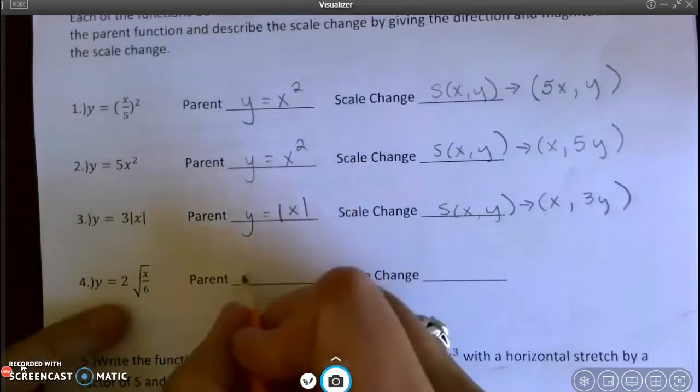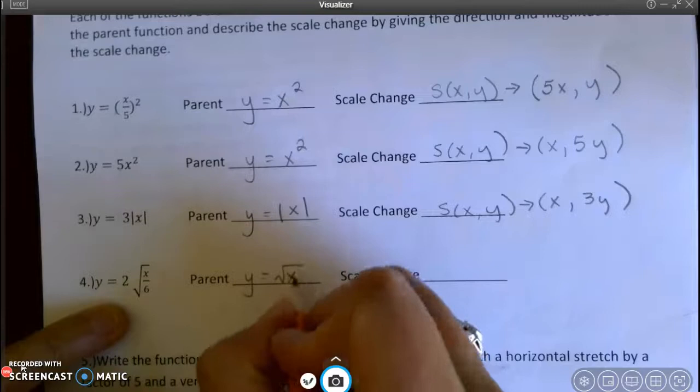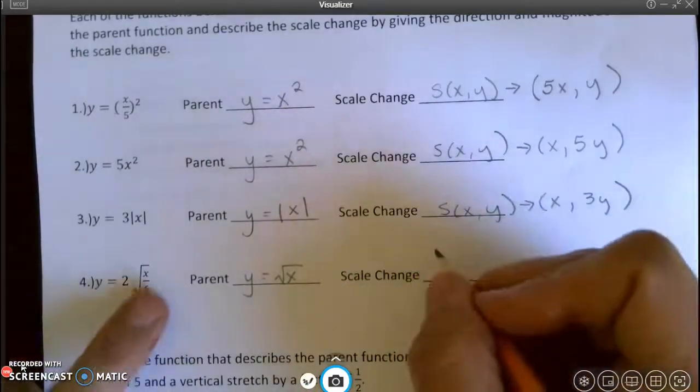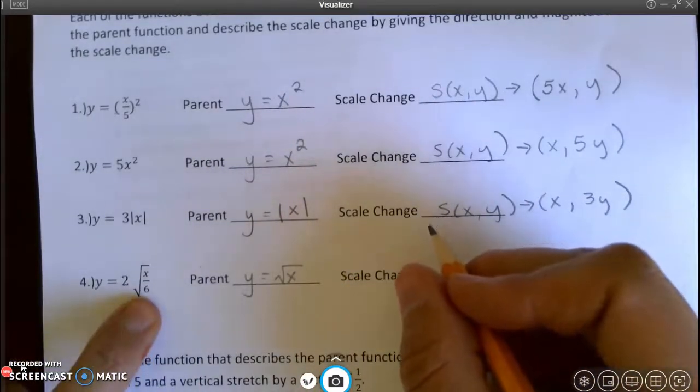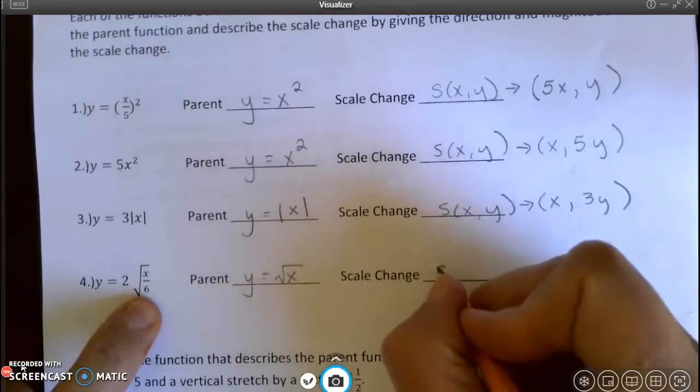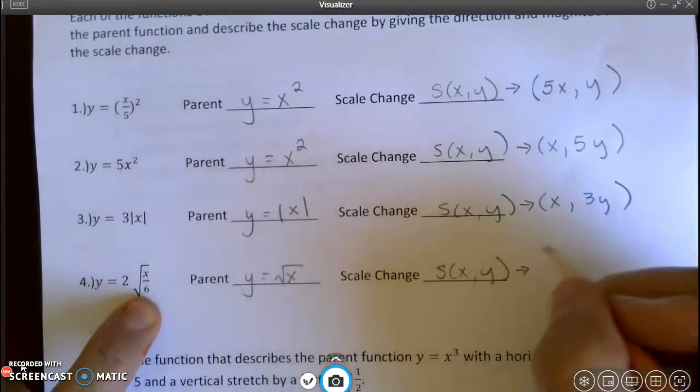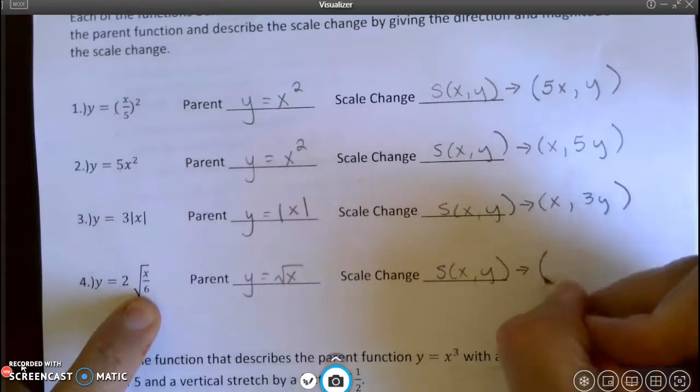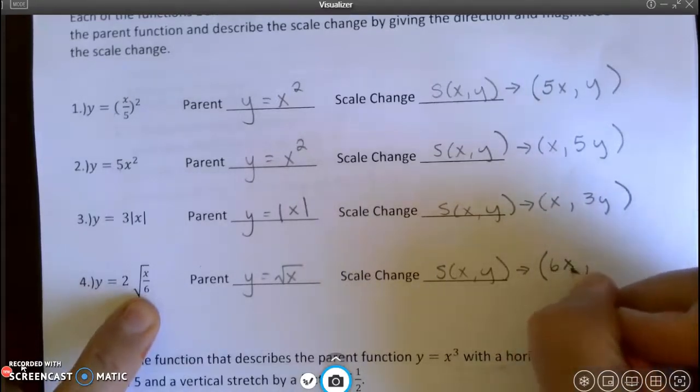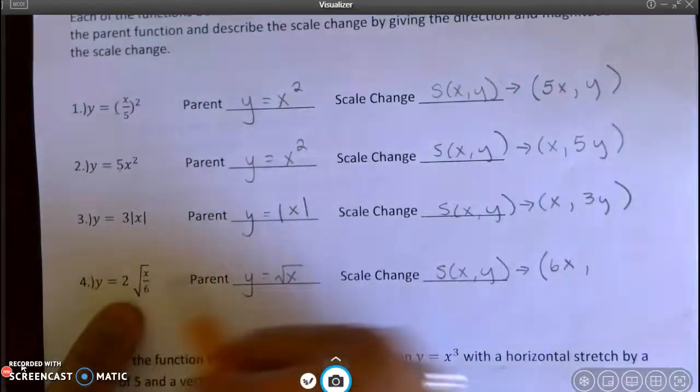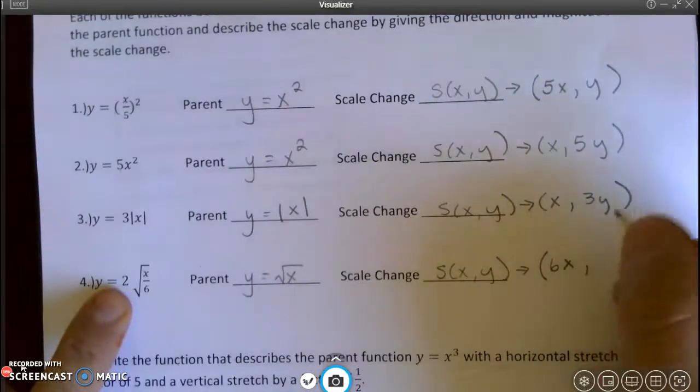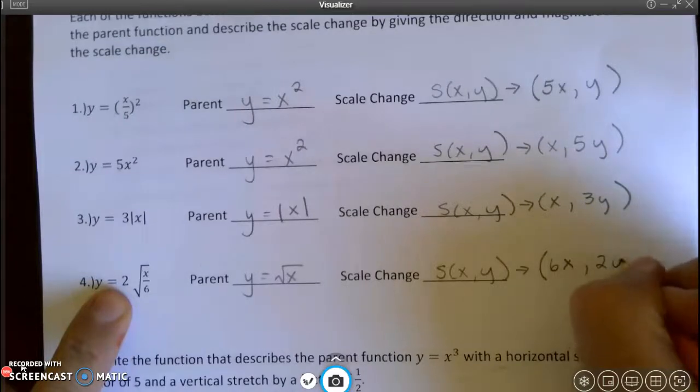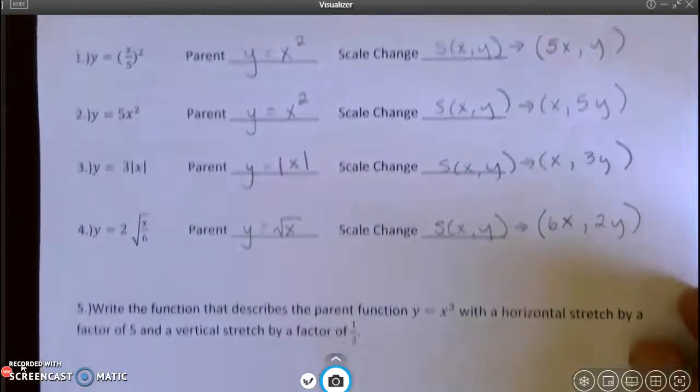All right, once again, what's my parent? y equals the square root of x. Since the 6 is in the grouping symbol with the x, that is affecting the x. It's being divided in the equation, so it must be multiplied in the scale change, x lies. Here it's multiplied, here it's divided. This 2 is outside the grouping symbol, so it's affecting the y.